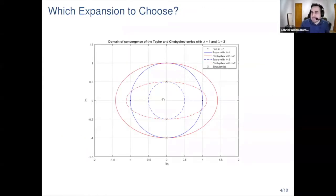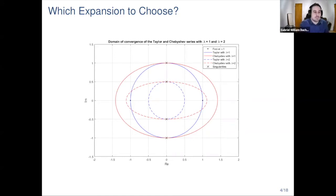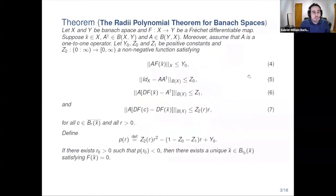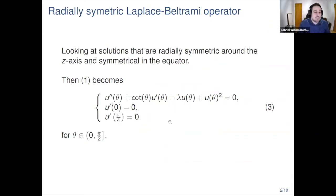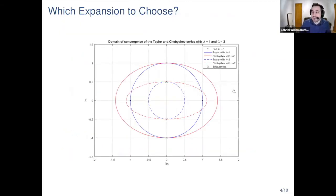Another series we could use is a Chebyshev expansion, because Chebyshev expansions are much stronger and do not suffer from the limitation of Taylor series whose domain of convergence is a disk. Chebyshev series have an ellipse as the domain of convergence, with foci at minus one and one, and we can always rescale our problem to guarantee convergence. However, the cotangent becomes much harder to deal with in the Chebyshev setting because of the discontinuity at zero. So instead, we will use a mix of the two.